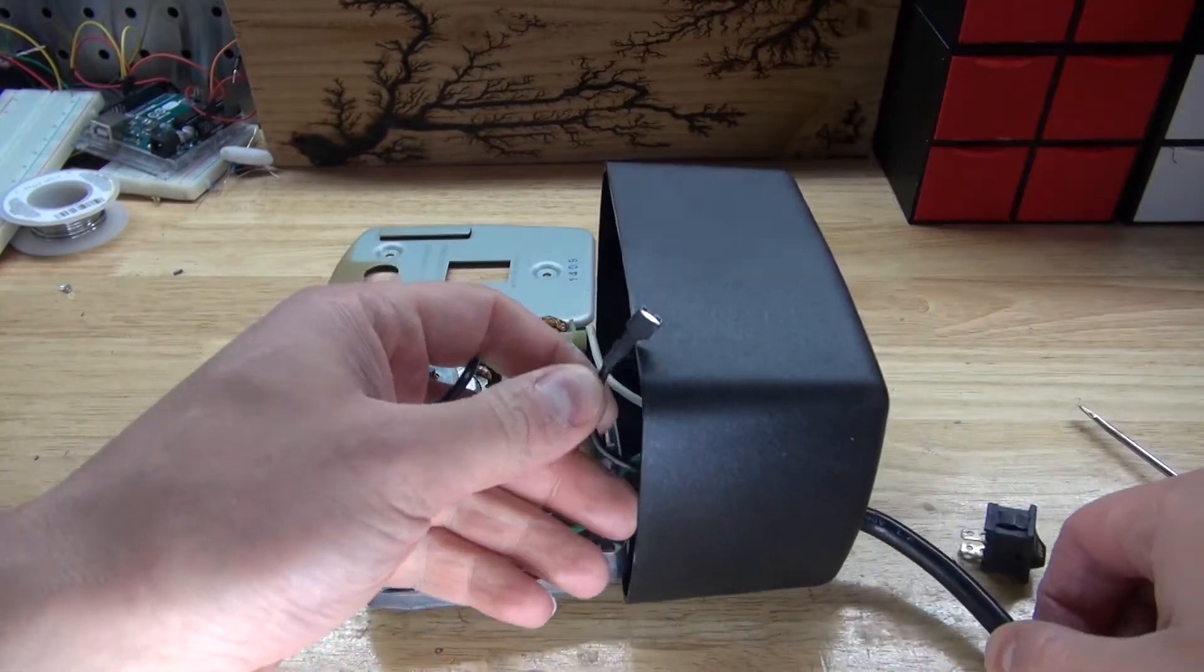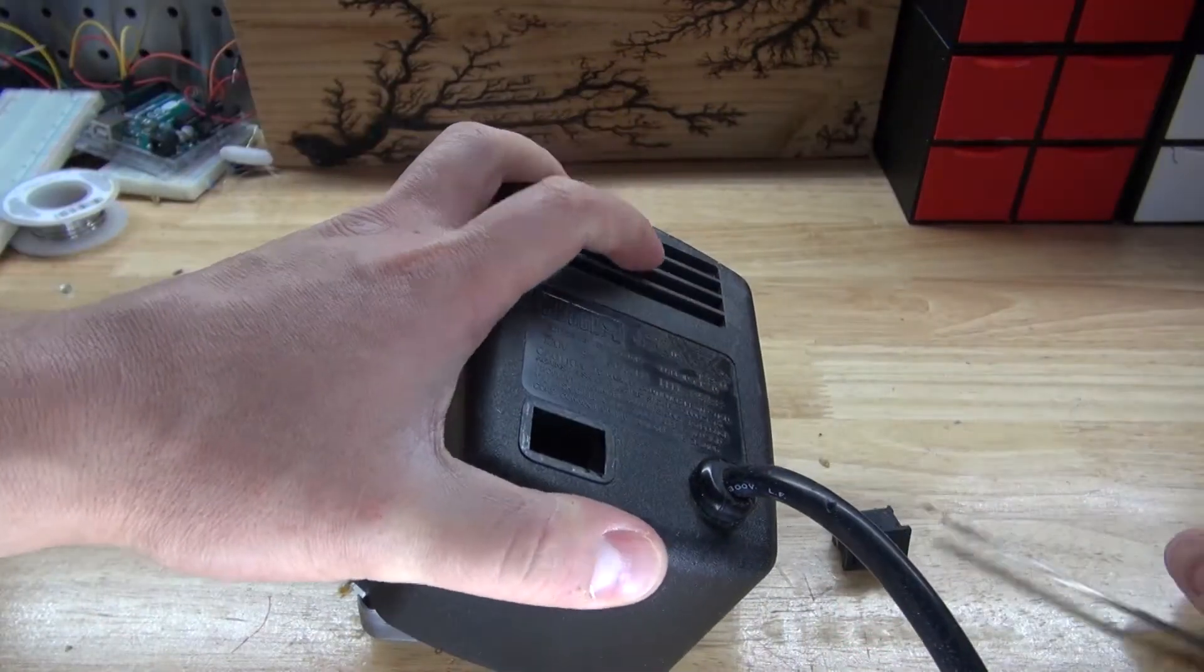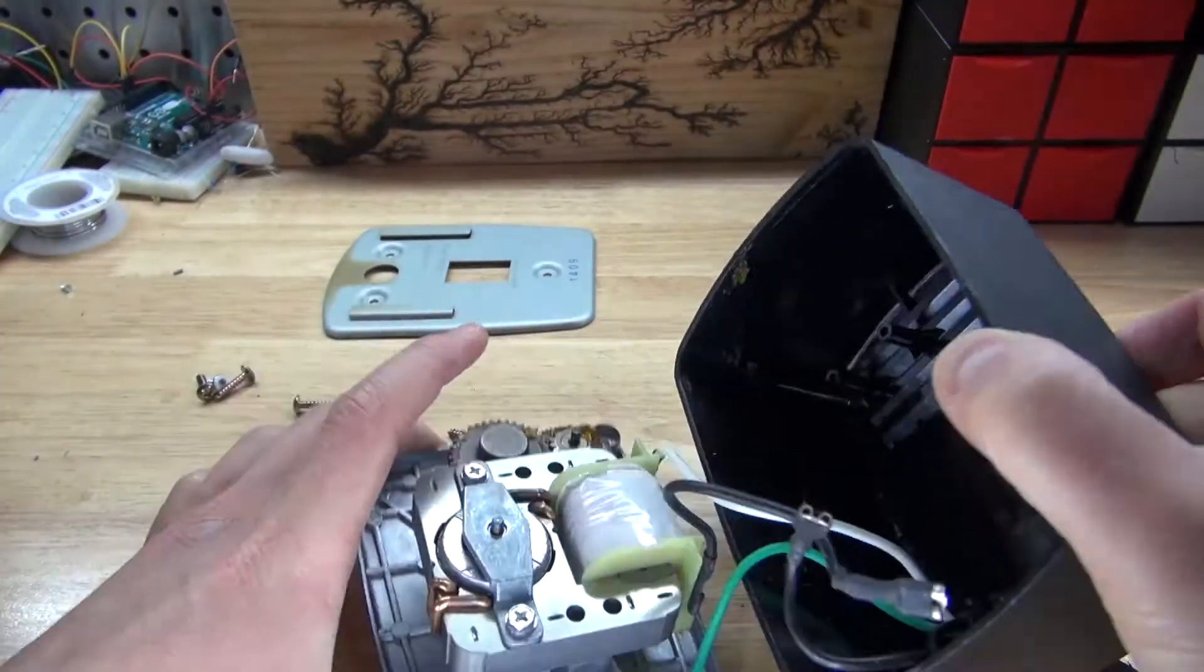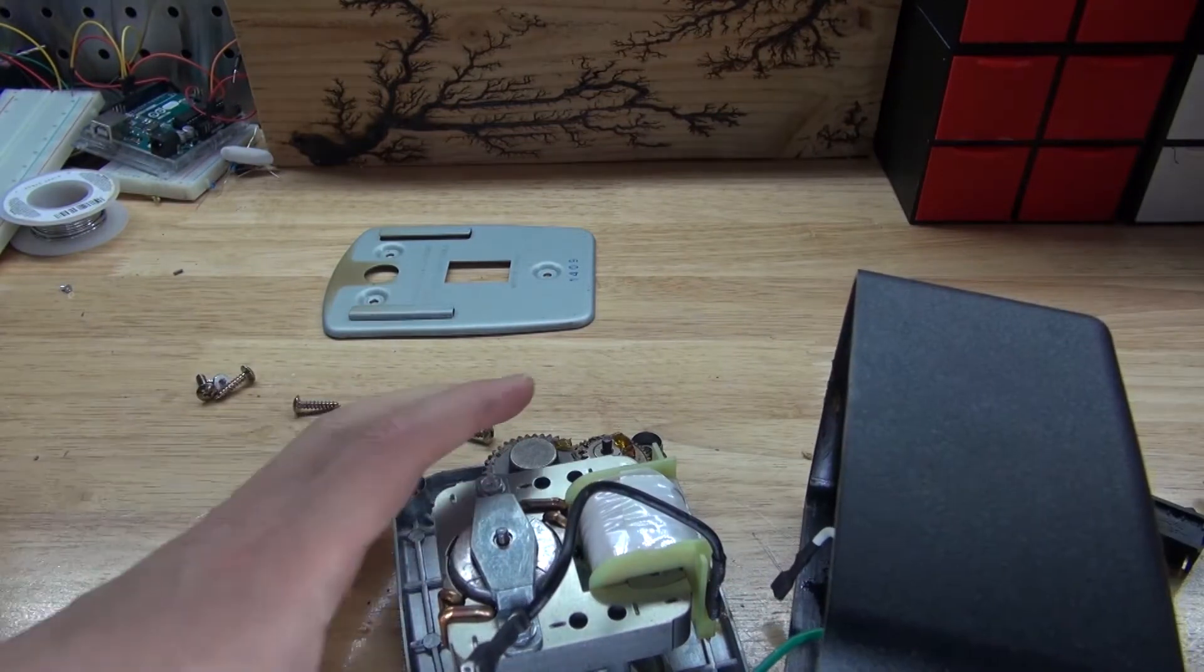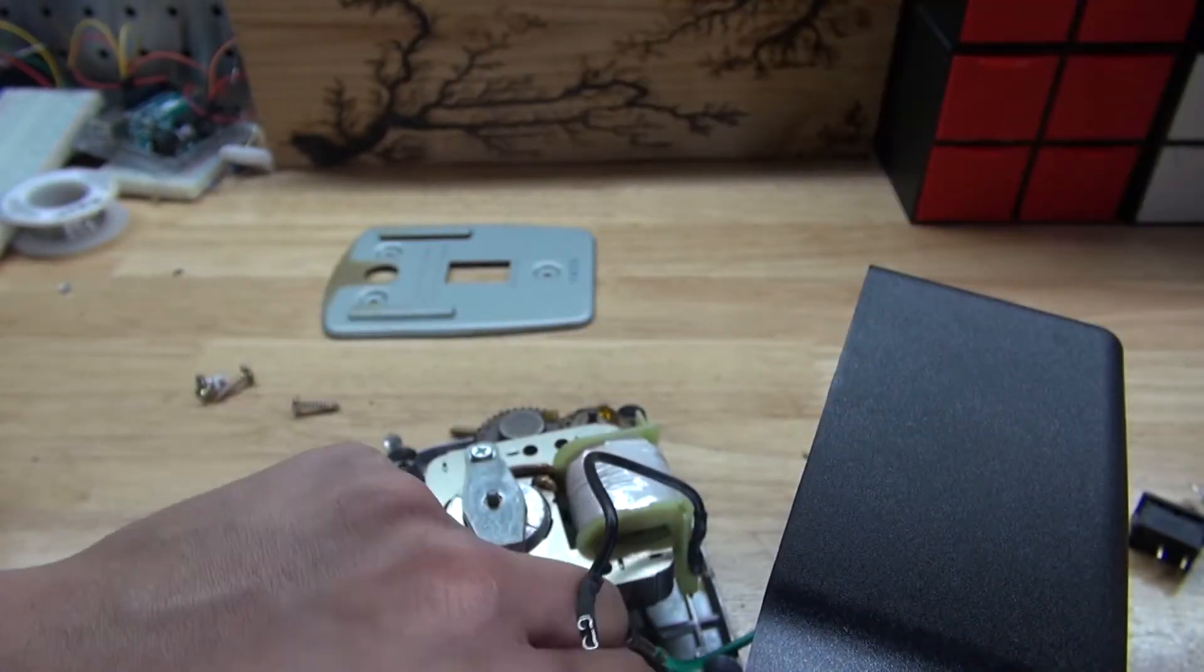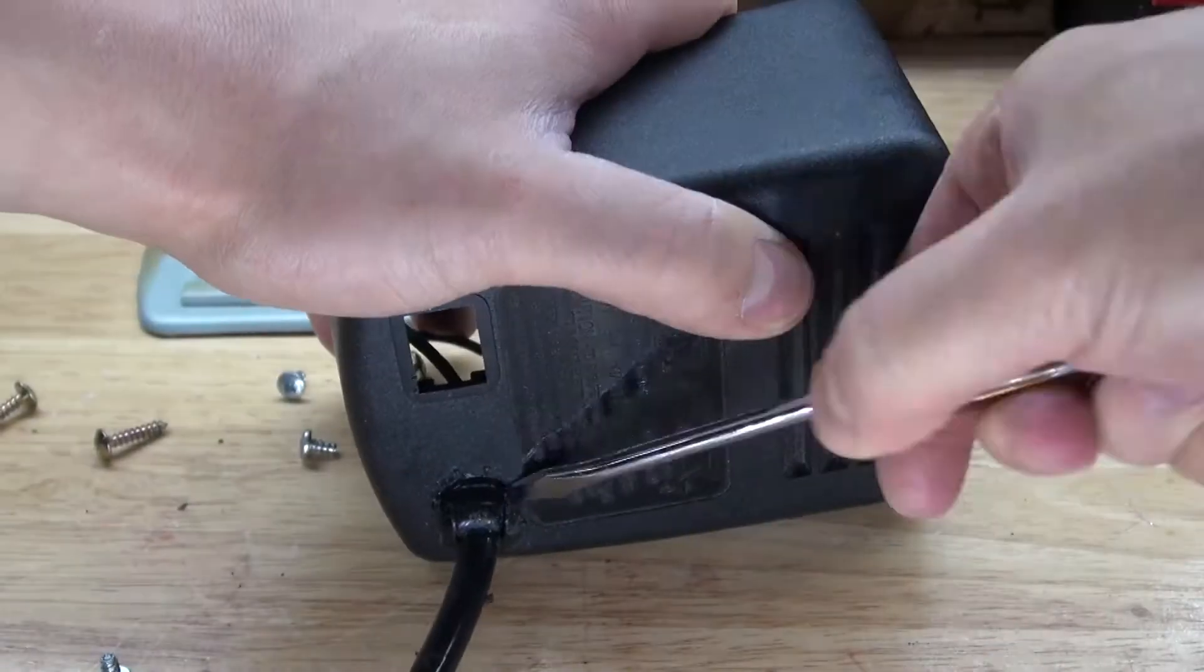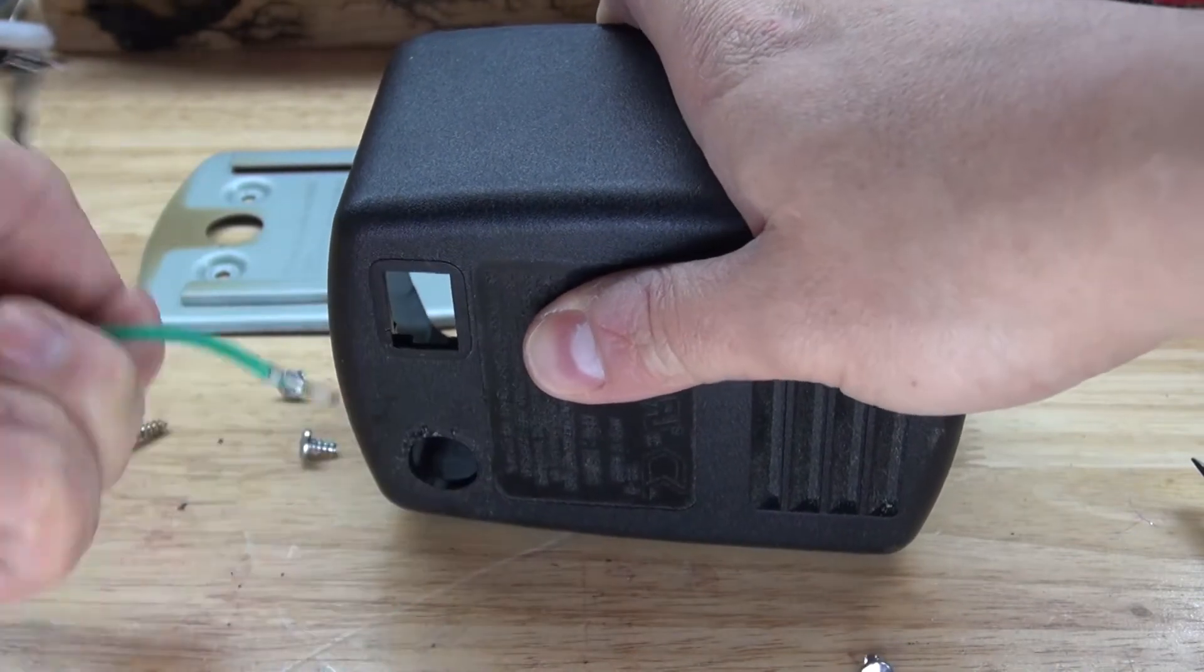And now I need to repeat the same process with the electrical cord. I need to remove this little piece here that holds the electrical cord into place. Next, I'm going to pull out the neutral wire, and then remove the ground wire. Both wires are now removed, and now I'm going to pull out the electrical cord. It should look just like this.